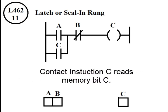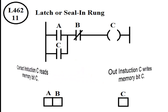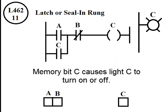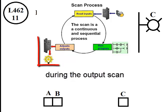Contact instruction C reads memory bit C. Out instruction C writes memory bit C. Memory bit C causes light C to turn on or off during the output scan only.